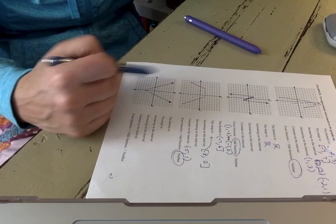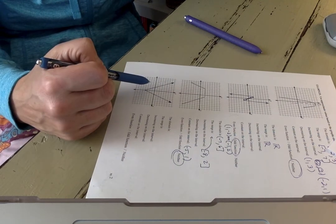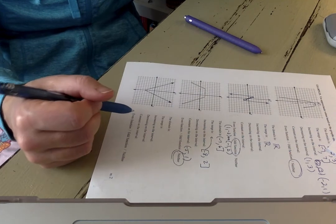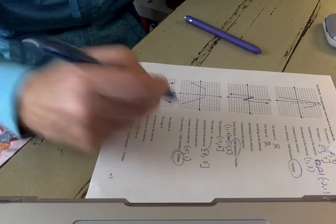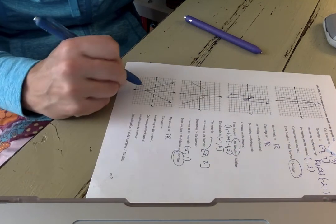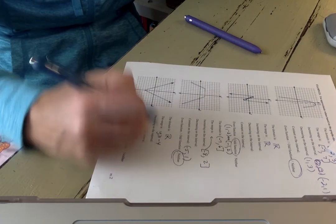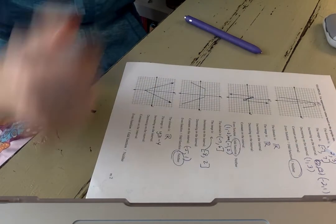This right here, I hope you all recognize as an absolute value function. I think you saw that back in Algebra 1 when you were children. Your domain is all reals. Your range, the lowest y value, is going to be greater than or equal to negative 4 because it starts at negative 4 and goes off into the sunset.